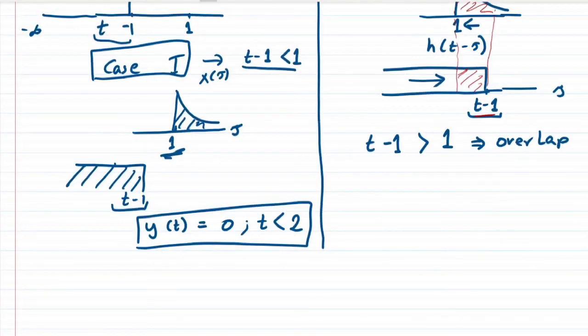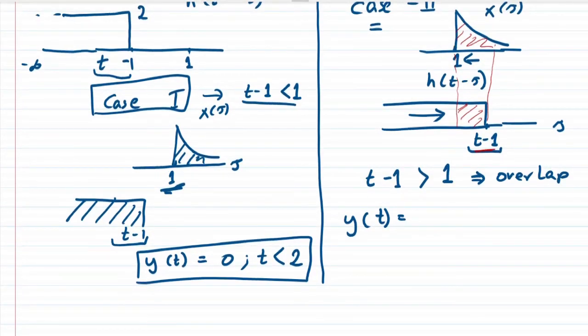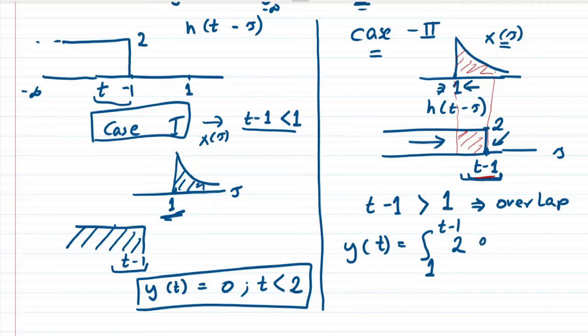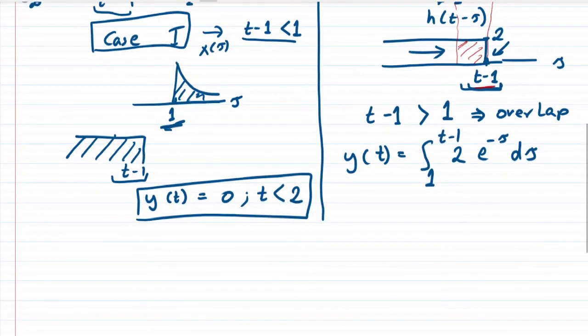Hence y(t) would start from the overlap starting point which cannot be less than 1. This integration is going to start from 1 and terminate at t minus 1. The magnitude was 2, so we have 2 times e to the power minus τ dτ.